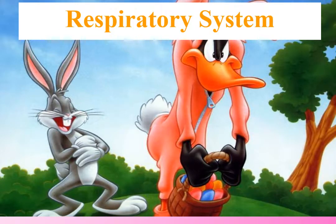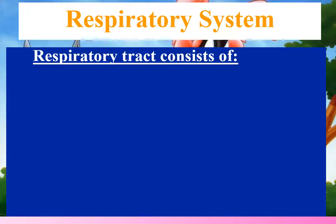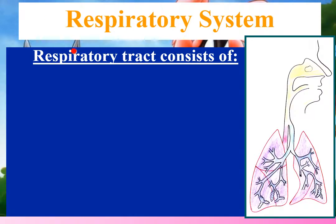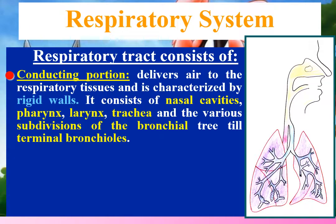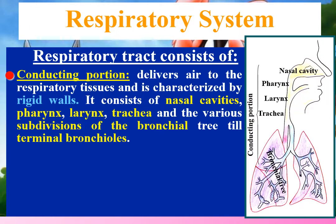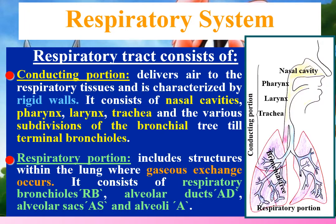The respiratory system's respiratory tract consists of two major subdivisions. The conducting portion delivers air to respiratory tissues and is characterized by rigid walls. It consists of nasal cavities, pharynx, larynx, trachea, and the various subdivisions of the bronchial tree till the terminal bronchioles. The respiratory portion includes structures within the lung where gaseous exchange occurs: respiratory bronchioles, alveolar ducts, alveolar sacs, and alveoli.